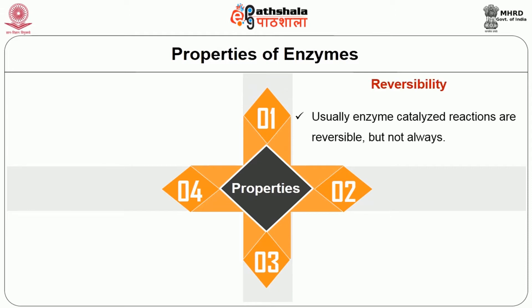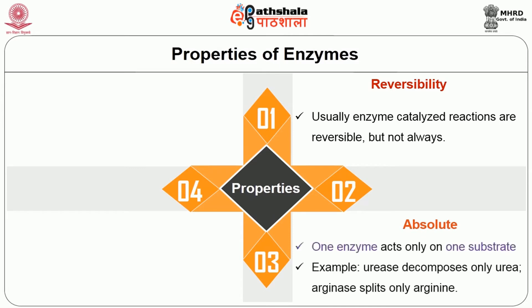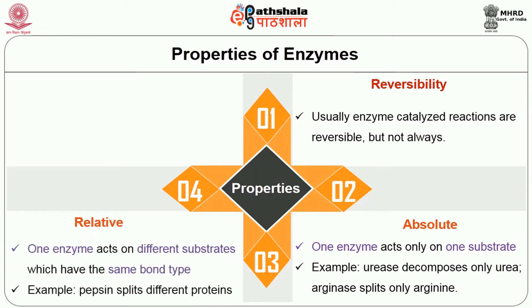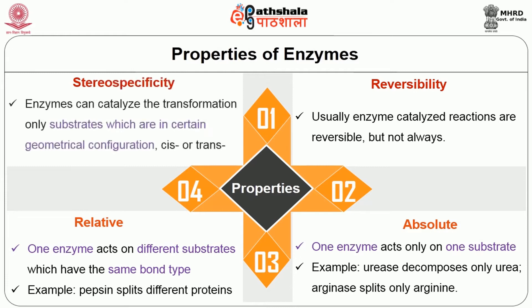Enzyme reactions are reversible. Enzymes are absolute — one enzyme acts on only one substrate; for example, urease decomposes only urea and arginase splits only arginine. However, most enzymes are related, meaning one enzyme can act on different substrates sharing the same bond type — for example, pepsin splits different proteins. Lastly, enzymes are stereospecific: some enzymes can catalyze transformations only when substrates are present in a particular geometrical configuration, such as the cis or trans form.